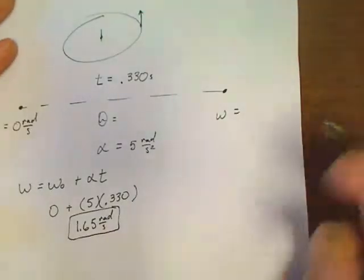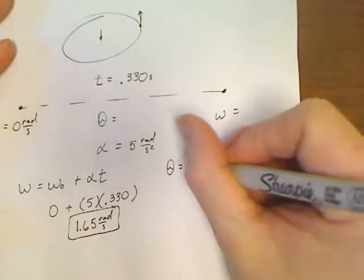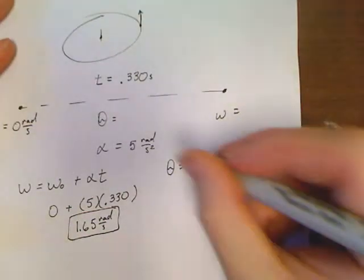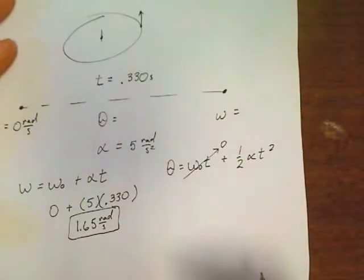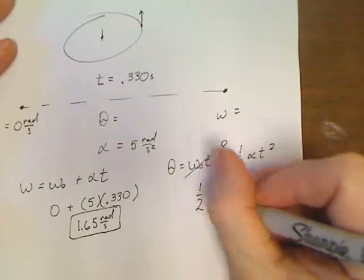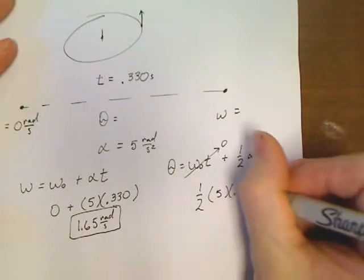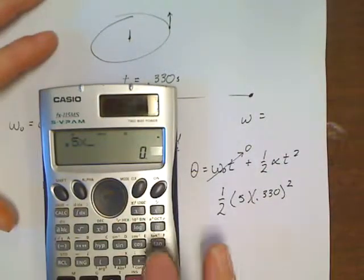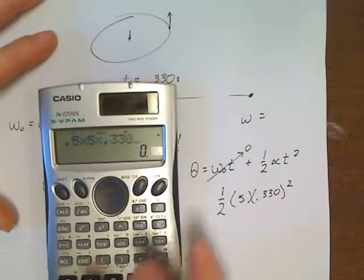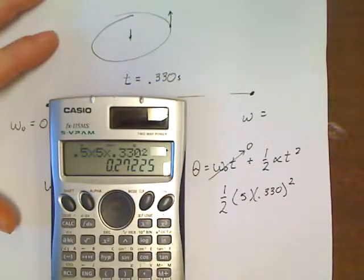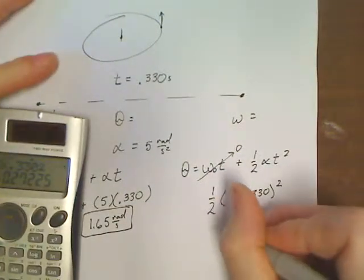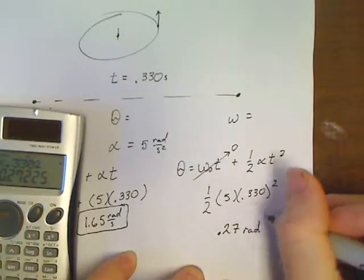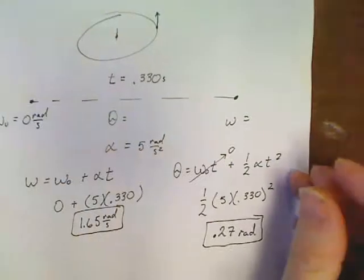It also asked me to find theta. So how can I find theta? Well, I've already got an equation solved for theta. Theta is equal to omega-zero-t plus 1 half alpha-t squared. Omega-zero is 0, so I can just get rid of that. So it's just going to be 1 half of 5 times 0.330 squared. So 0.5 times 5 times 0.330 squared. And I've got 0.2727 and my unit for theta is rads.